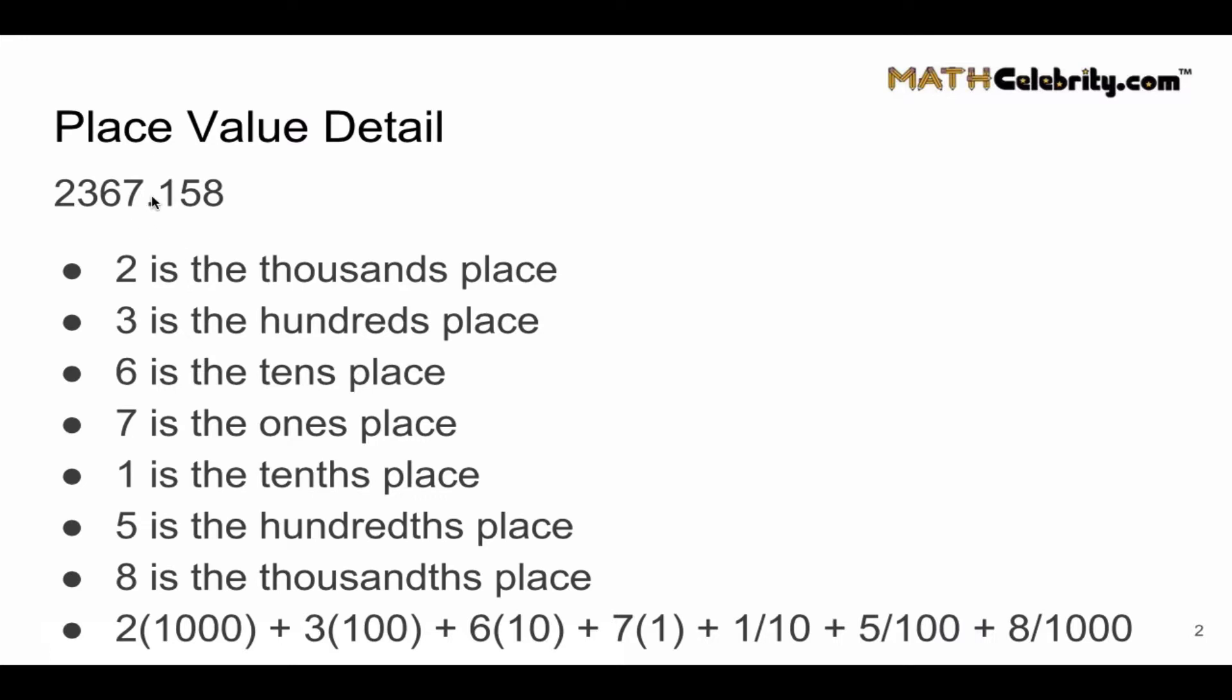So the place value serves two purposes. First, it tells you where in the number you sit. For instance, 3 is the hundreds place – everybody knows that's the third place to the left of the decimal. And second, the place value tells you how much to multiply that specific number by in the construction of your overall number.